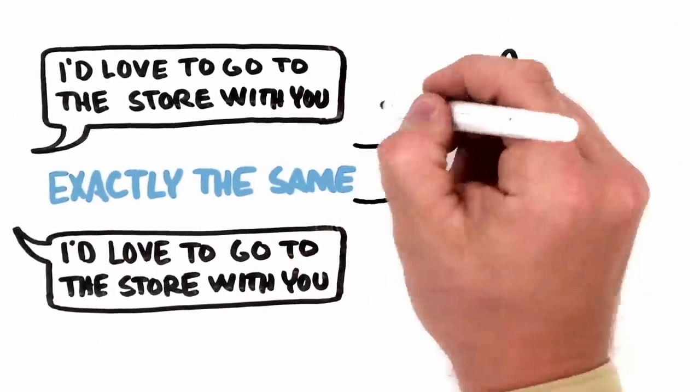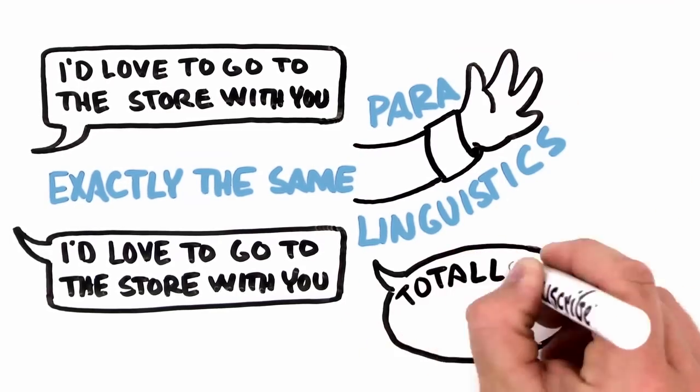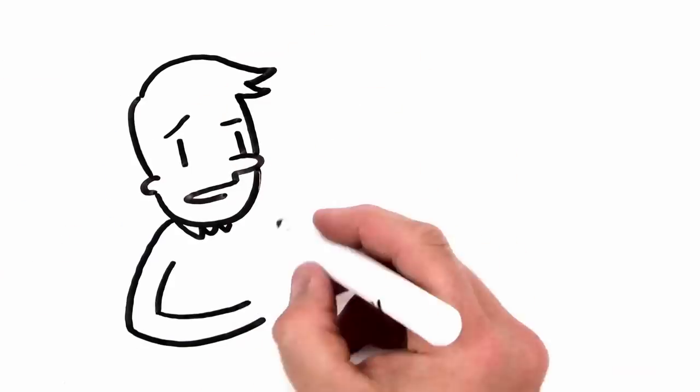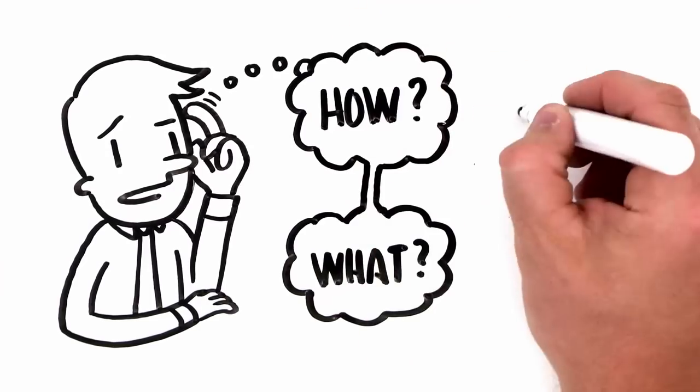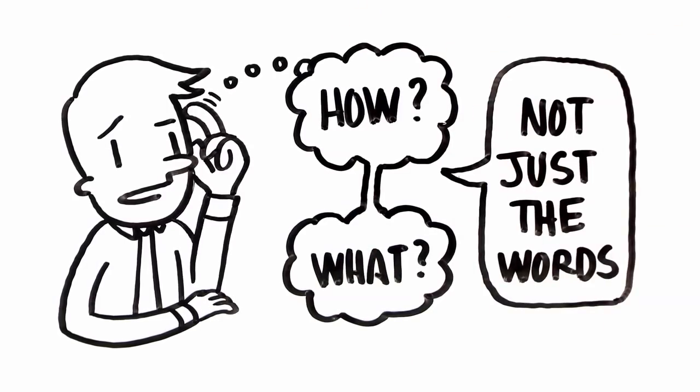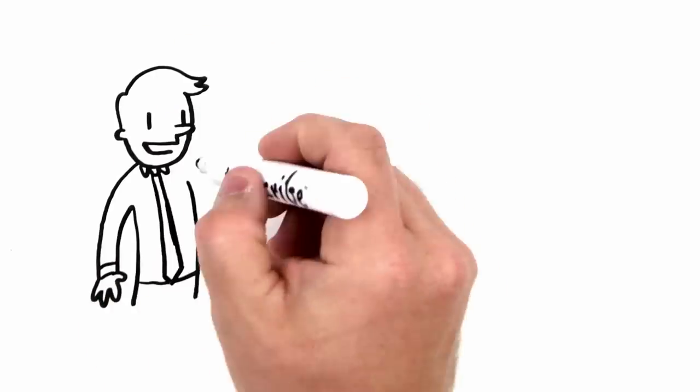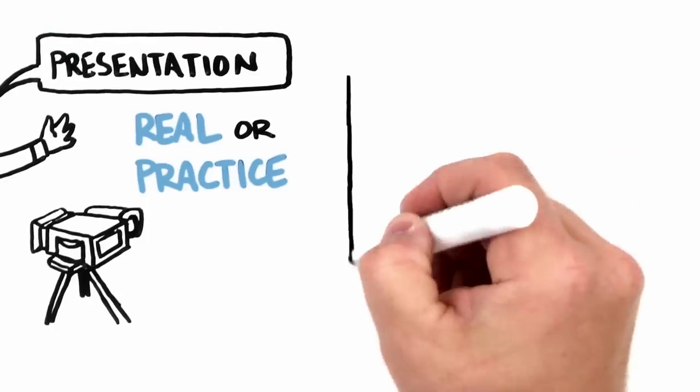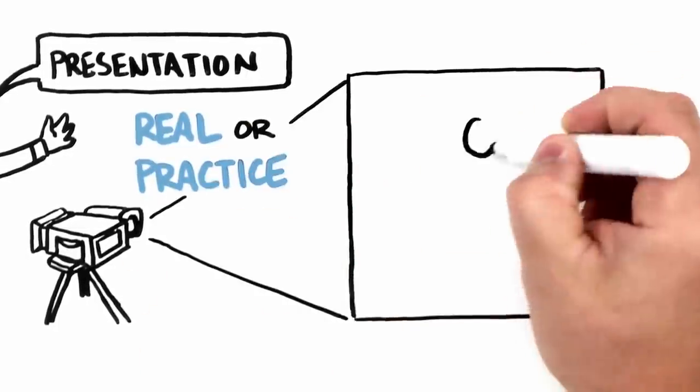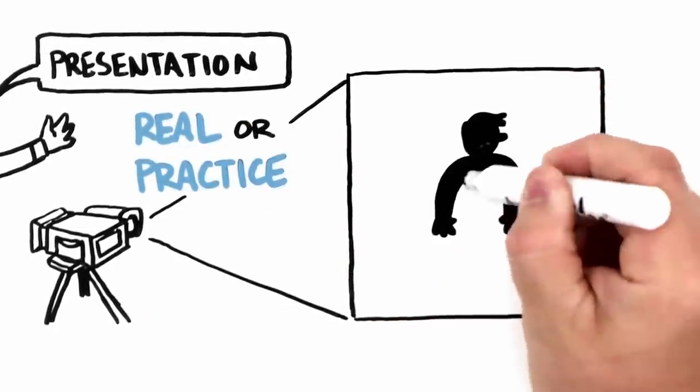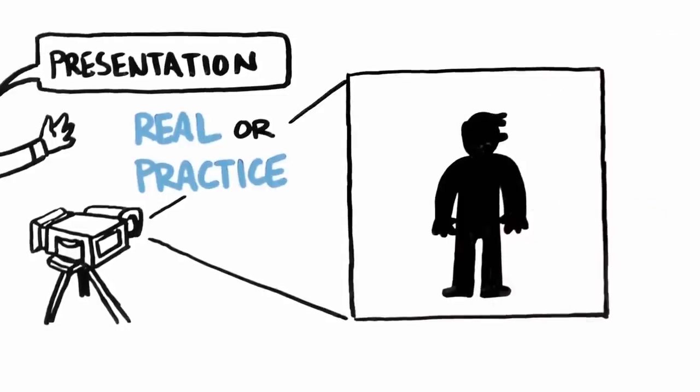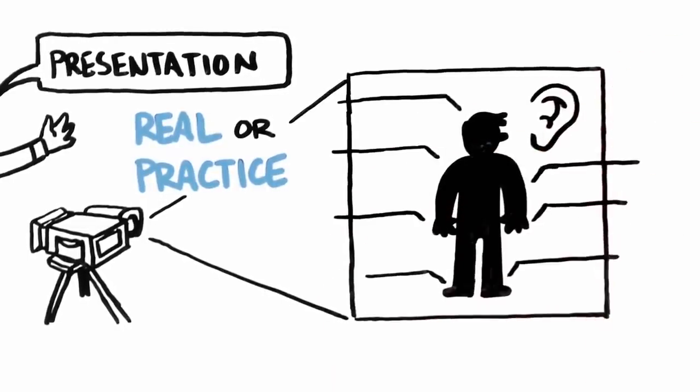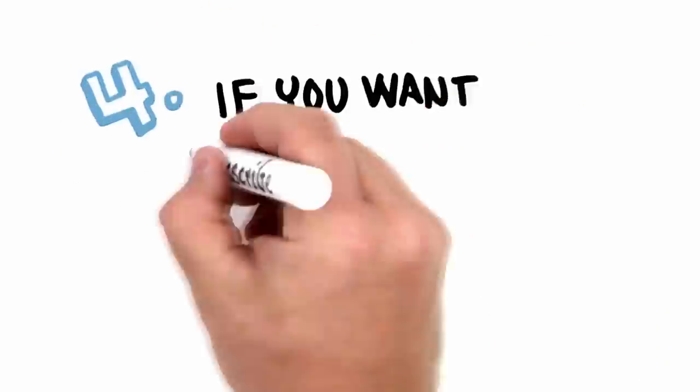...but the paralinguistics of the message is totally different. You want to think about how you are saying what you're saying, not just the words. One of the best things that you can do is record a video of yourself giving a presentation—either a real one or just record a practice—and take a look at it and see what your body language and listen for what your paralinguistics are saying.